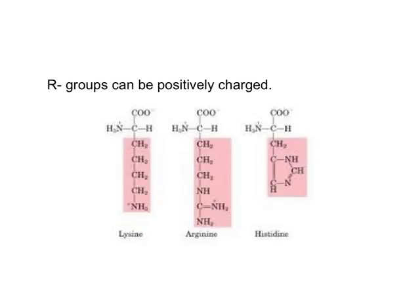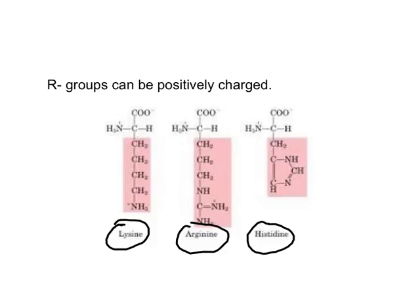These R groups, these side chains, can be positively charged. We have three different positively charged amino acids: lysine, arginine, and histidine, where it is not immediately obvious where the positive charge in the side chain is located. Importantly, these positive charges are always located at a nitrogen in the side chain.